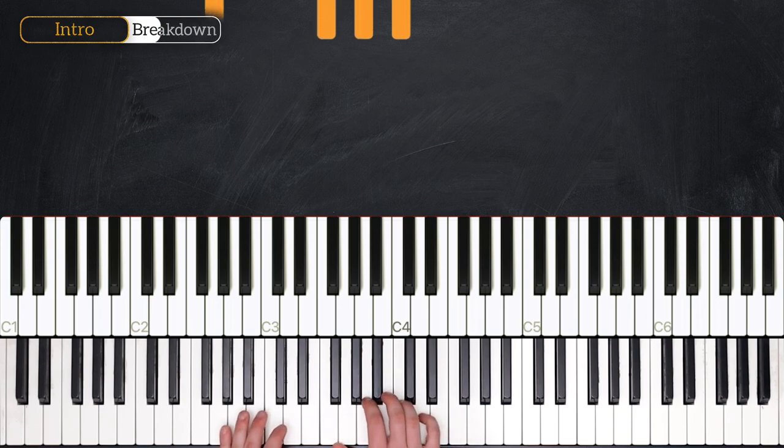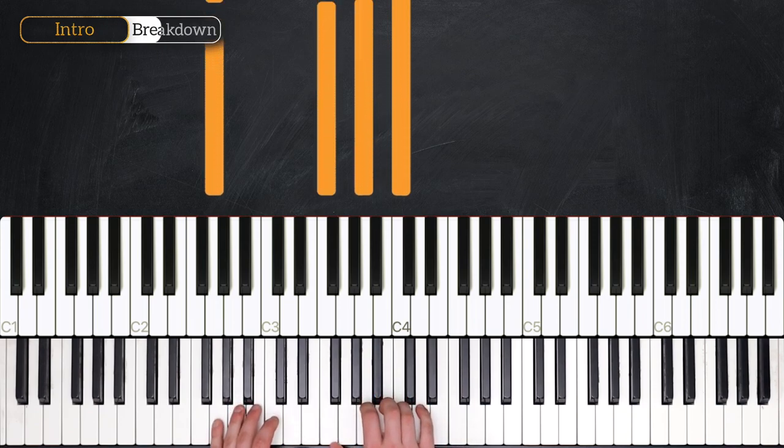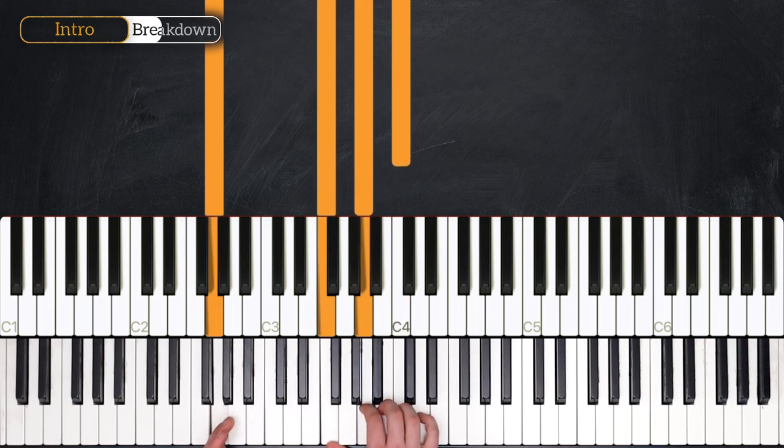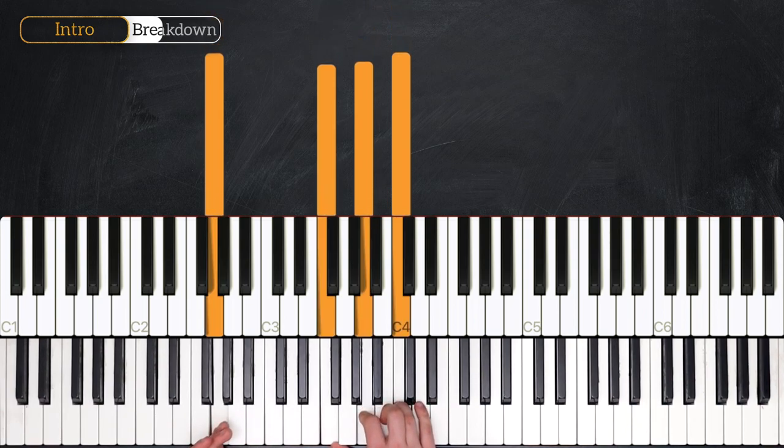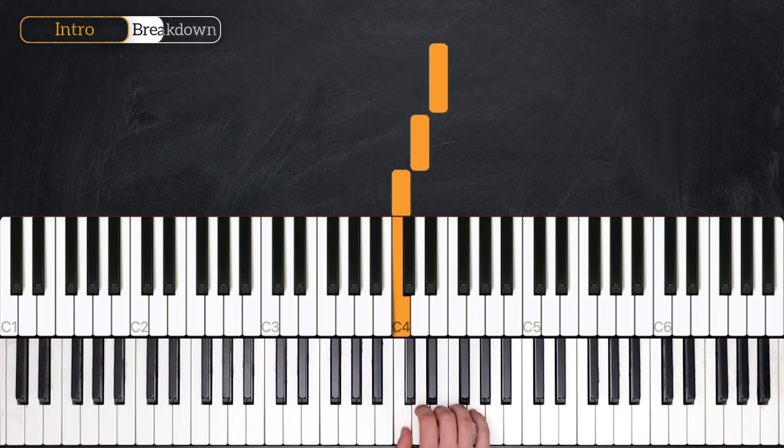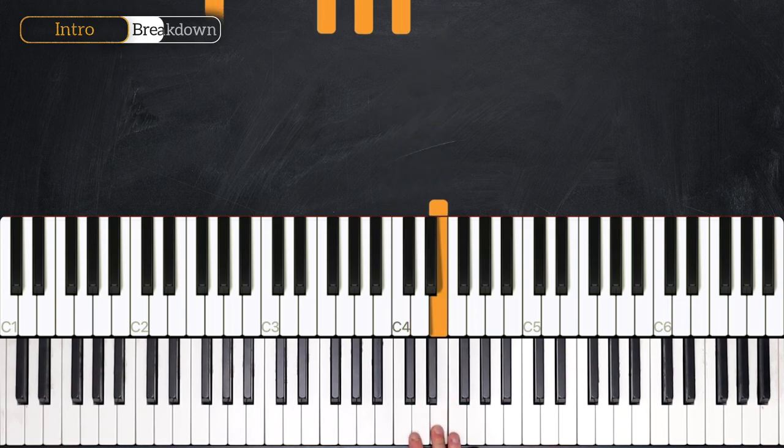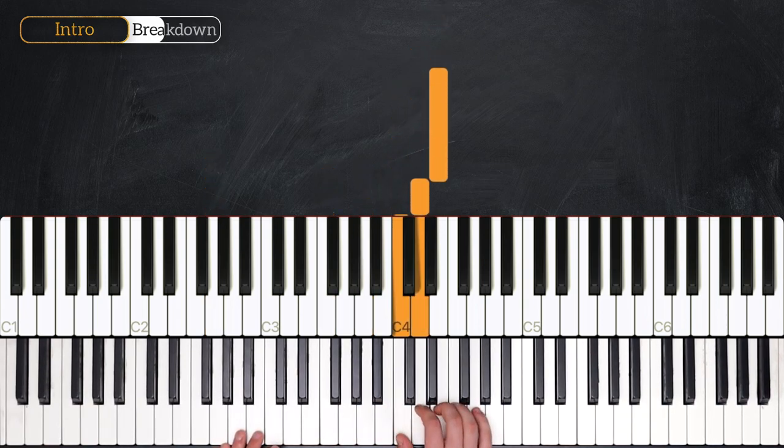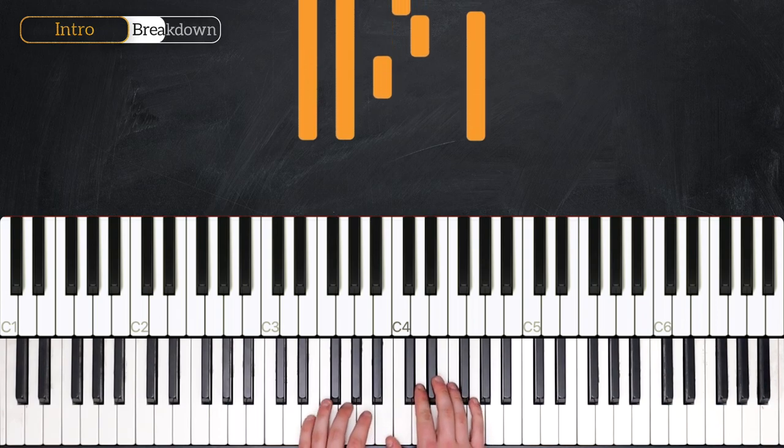Then in the next bar, we have our G suspended eleven. G, F, A, C. We hold this for two beats. One, two. And then we have this triplet ascending line that consists of C, D, E. So that's one, two, triple, A.